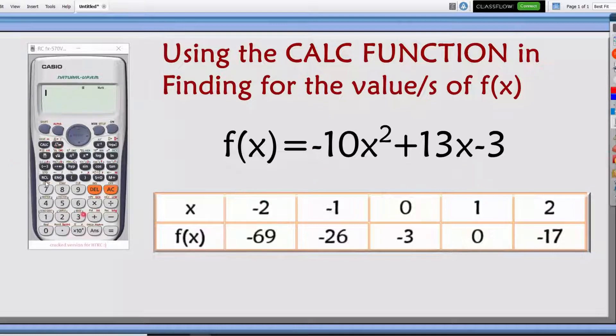We have minus 10 and then alpha, look for the x squared, plus 13 alpha x minus 3.